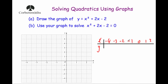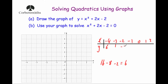I'm doing the XY table for part a, using x values from minus 4 to 2. For each value you square the number, double it and add, then subtract 2. For x equals minus 4: minus 4 times minus 4 is 16, double it gives minus 8, take away 2 gives 6. Working through all values gives y values: 6, 1, minus 2, minus 3, minus 2, 1, 6.